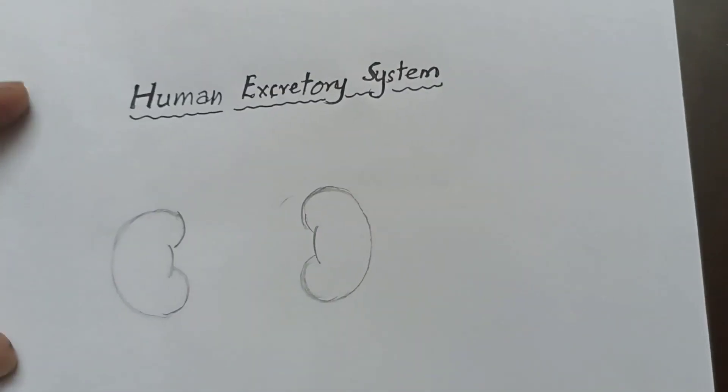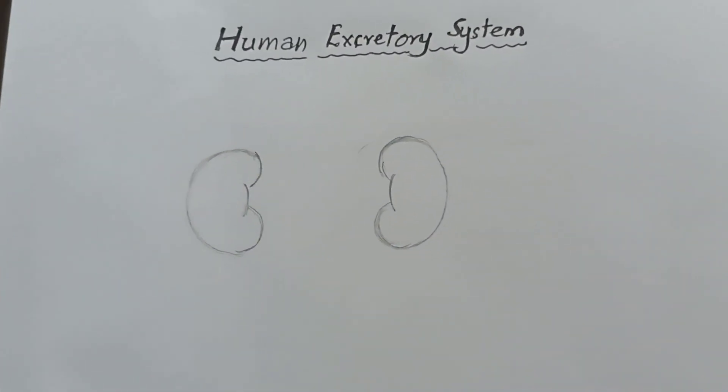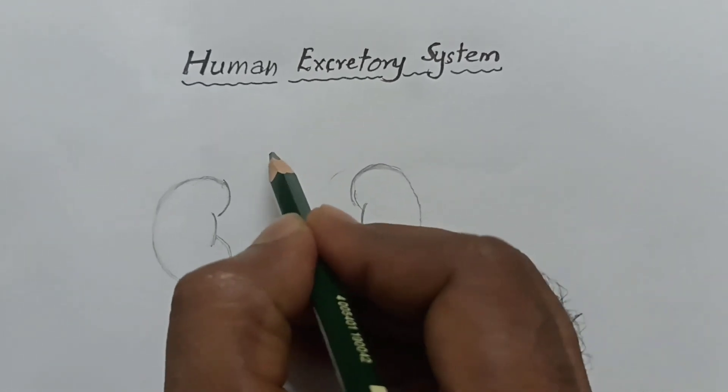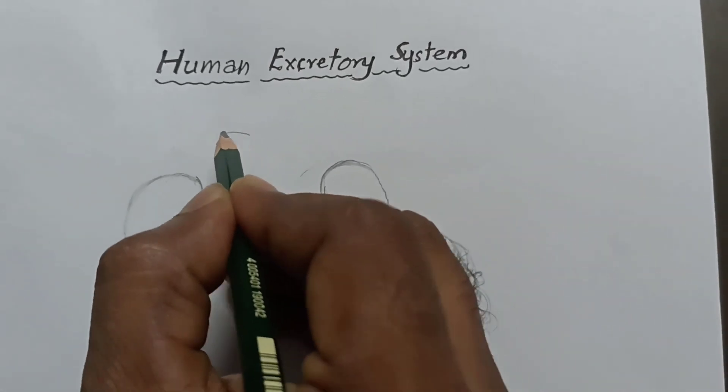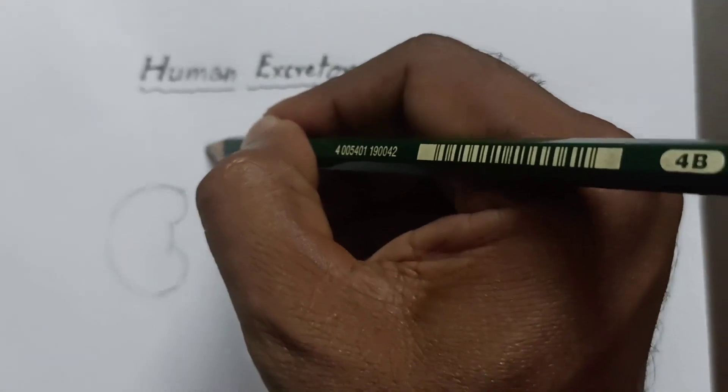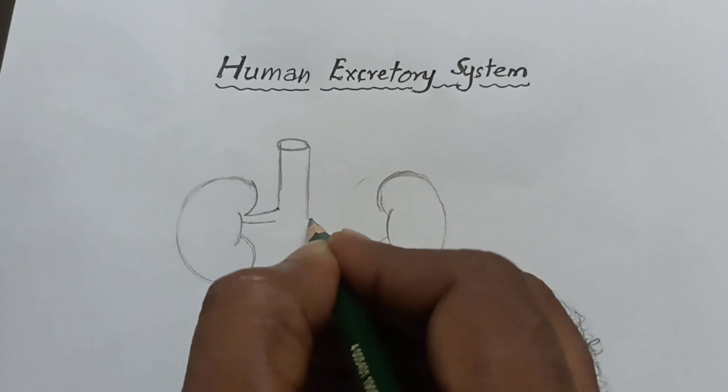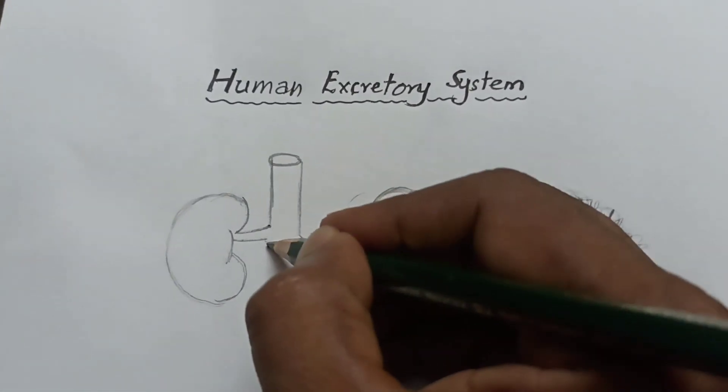Now I'm going to draw blood vessels. This is posterior vena cava. You draw like this. These are renal veins.